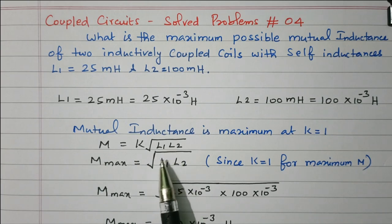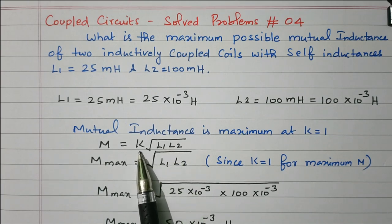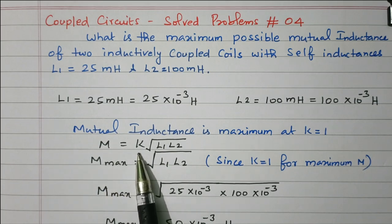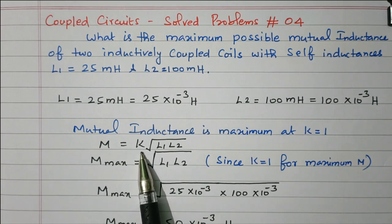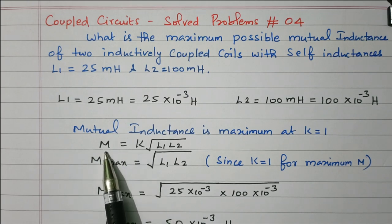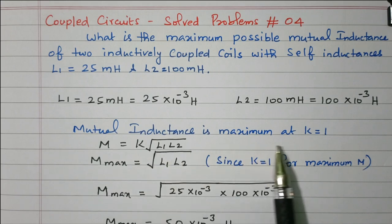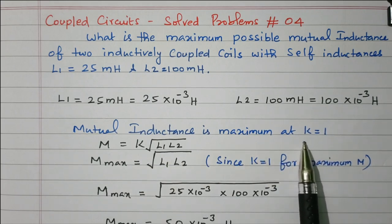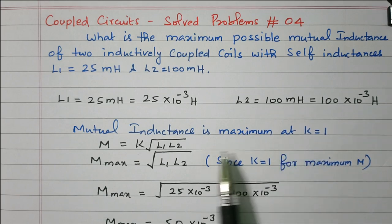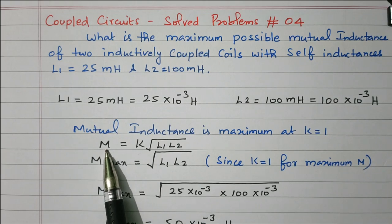L1 and L2 are the self inductances. If the coupling coefficient is maximum, we will get the maximum mutual inductance. The coupling coefficient determines how coil 1 is coupled with the second coil. If 100% the coils are coupled together, both coil 1 and coil 2, then we get maximum mutual inductance — that is when K equal to 1. K equal to 1 means both coils are 100% coupled together, and in that case we get maximum mutual inductance.